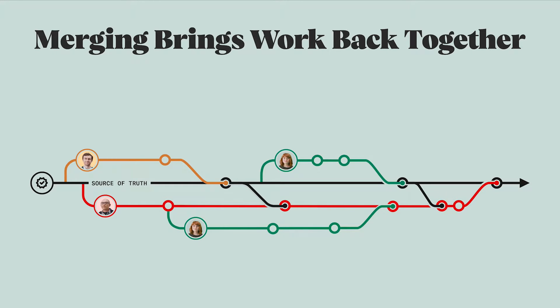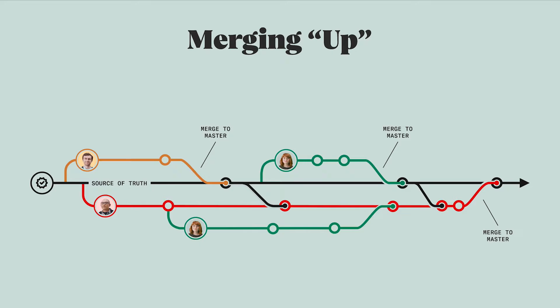All branches can merge into one of two places: master, or the branch they branched from. We're mostly going to be talking about merging to master in this video, but merging a branch up into its parent branch works the exact same way.